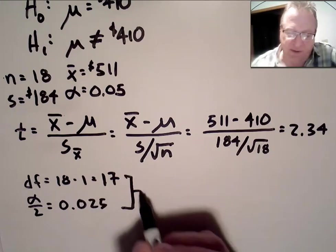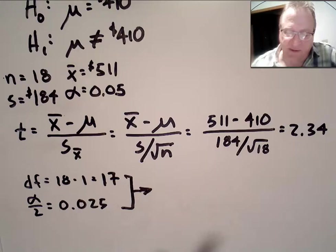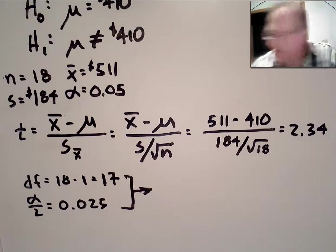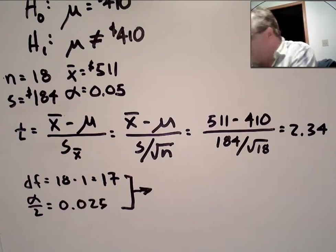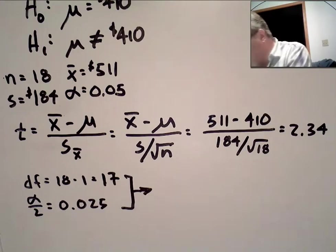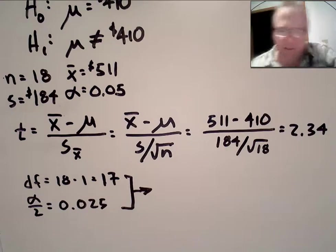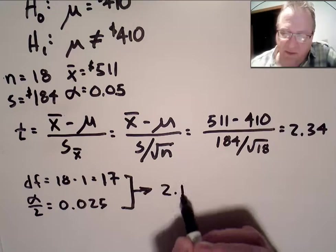And from those, we go to the t-distribution table in the back of our book. Not the very back cover, but the next page in. The degrees of freedom, 17, 0.025 significance level, and it gives us 2.11. 2.11.